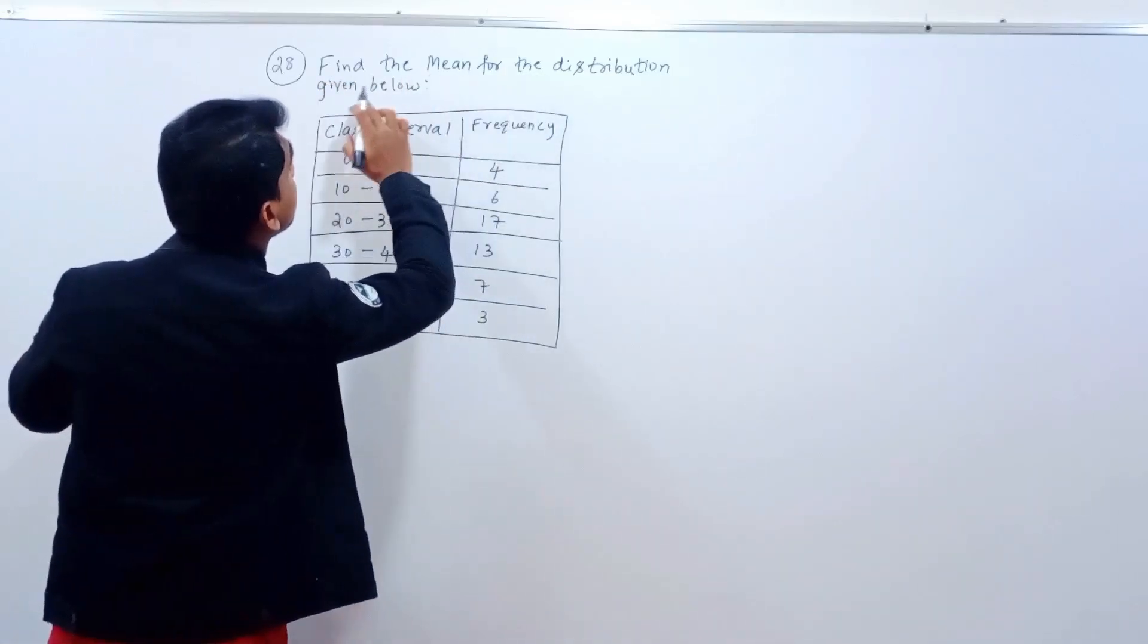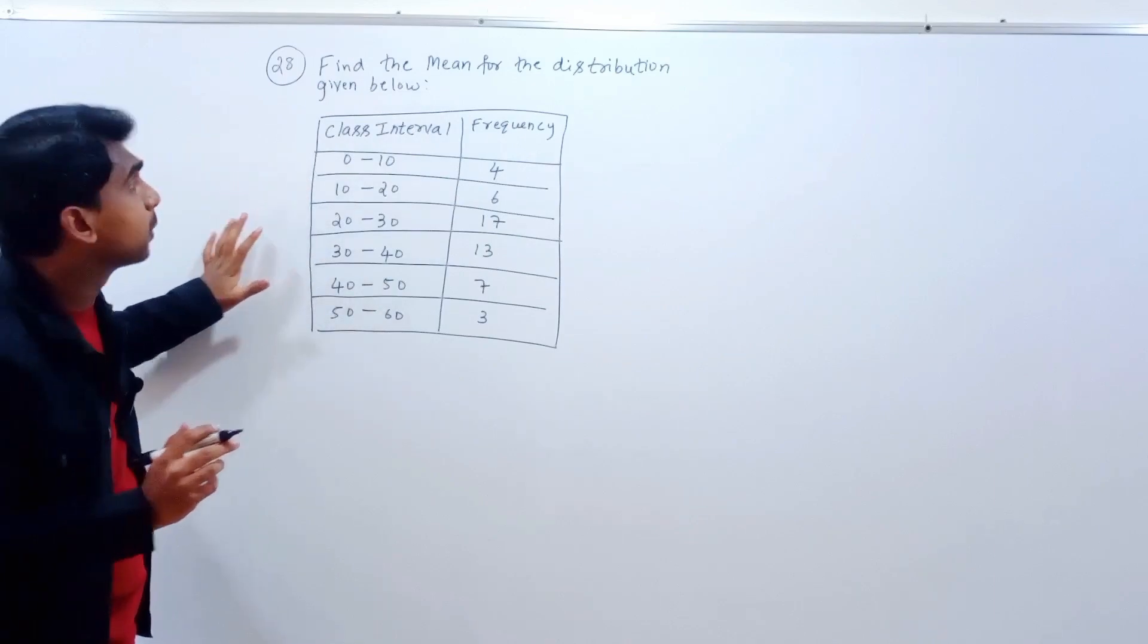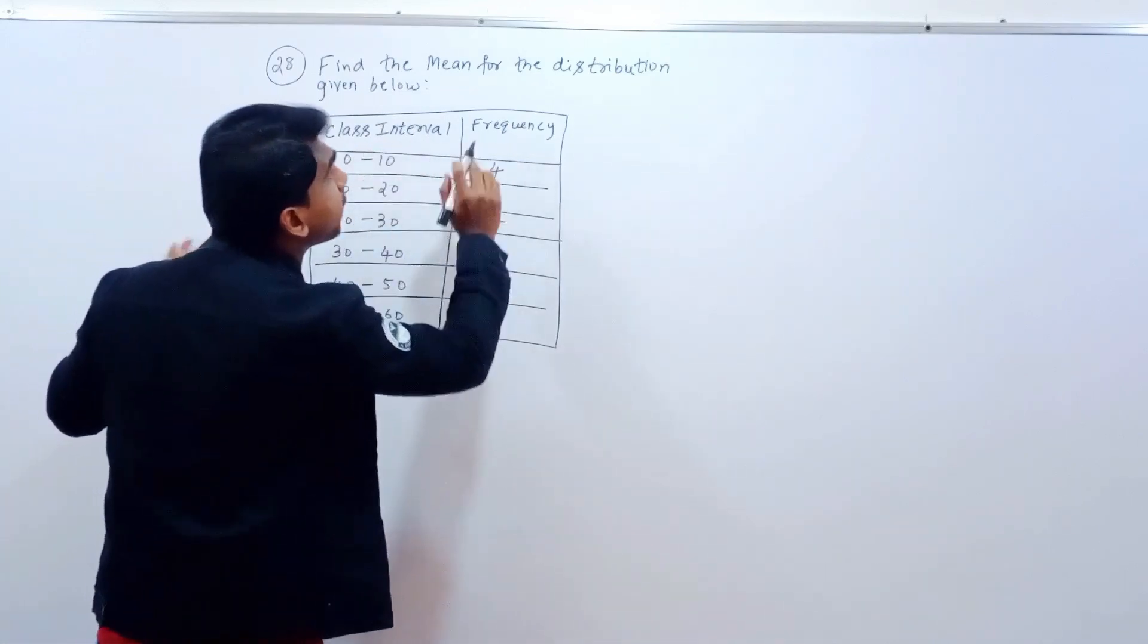28th question: find the mean for the distribution given below. I have to find the mean for this data. Class interval, frequency.